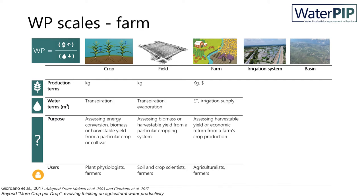At the farm level, the produce in relation to water supply or irrigation supply and its economic return are important to farmers, and it directly influences farmers' decisions, as the interest is to increase the harvestable yield or economic return to water supply.